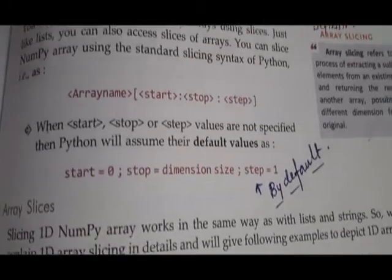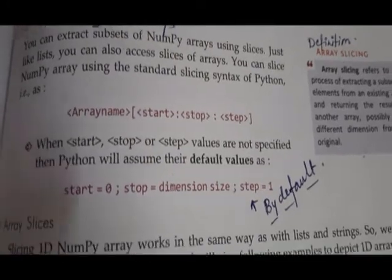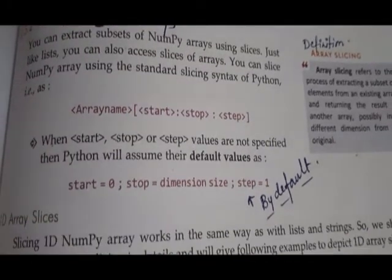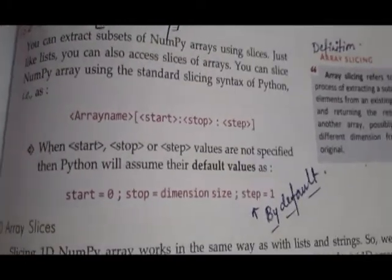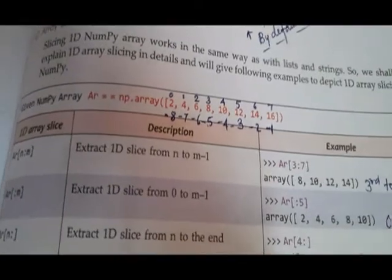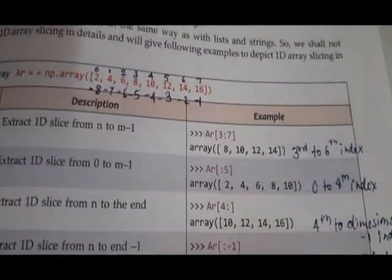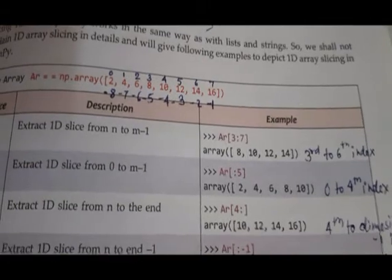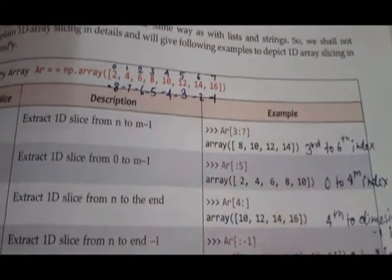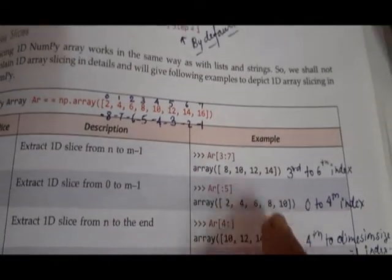This is the array we are going to refer to. The first slice is [3:7] — start value is 3, stop value is 6 (one less than 7). Whatever is extracted is 8, 10, 12, 14. Then the array indices from 0 to 7 are marked. The second slice is [:5] — start is 0, stop will be index 4 (5 minus 1).